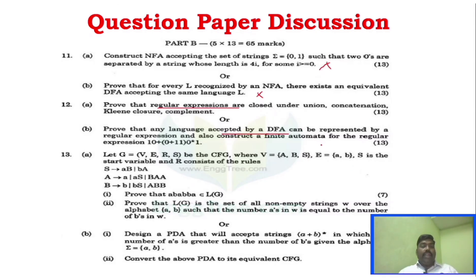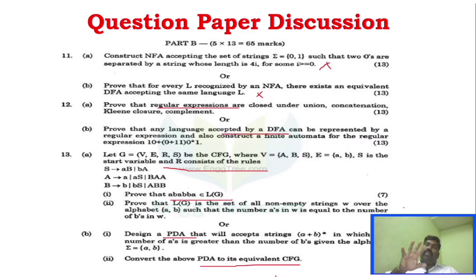Part B includes Unit 3 problems — proving statements, converting PDA to equivalent CFG, designing PDA, and converting every CFG. Unit 3 PDA-related problems and conversion to CFG are important here.